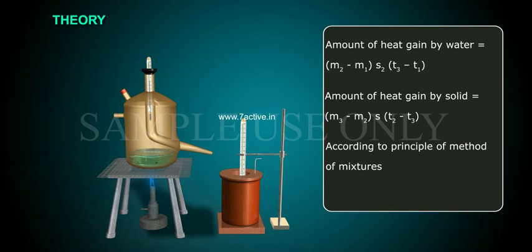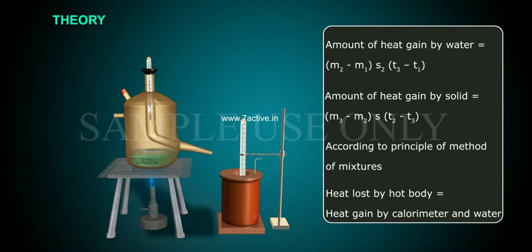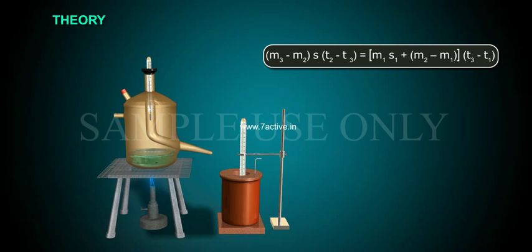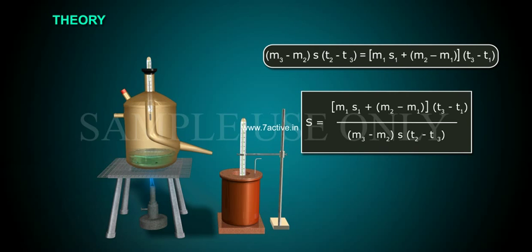By the principle of calorimetry, heat lost by hot solid equals heat gained by calorimeter and water: M1 S1 plus (M2 minus M1) S2, all multiplied by (T3 minus T1), equals (M3 minus M2) into S into (T2 minus T3).